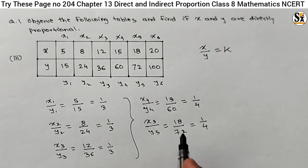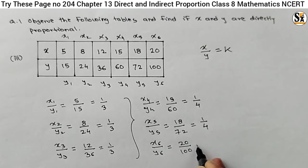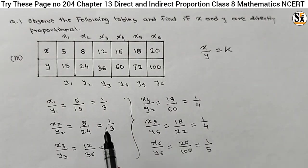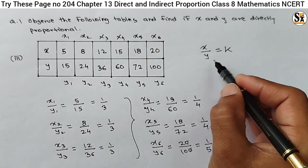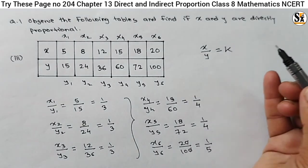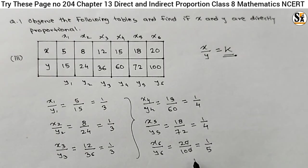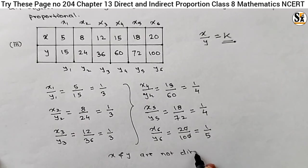The ratio for the first three values is 1 upon 3, and for the remaining: x6 upon y6, that is 20 upon 100. The ratio will be 1 upon 5. Though the values are increasing, if we take the ratio for the first three we get the same ratio, but for the remaining three the ratio is different. Our basic condition requires that the ratio for all values of x corresponding to the values of y must be constant and the same. Here the ratio is different for different values of x and y. So here also we can say x and y are not directly proportional.